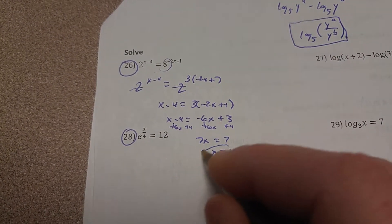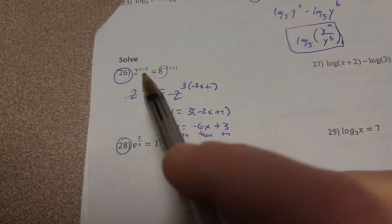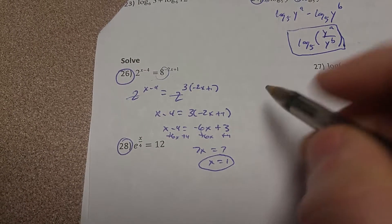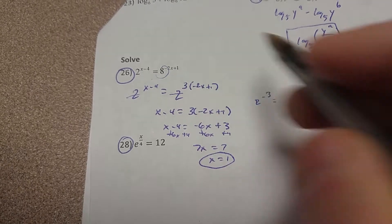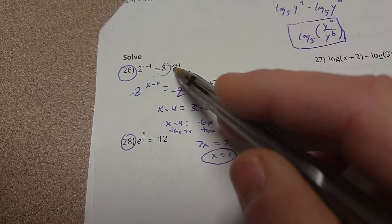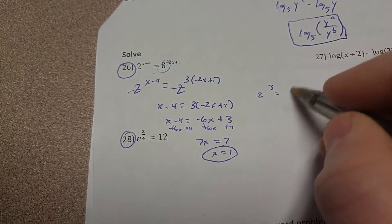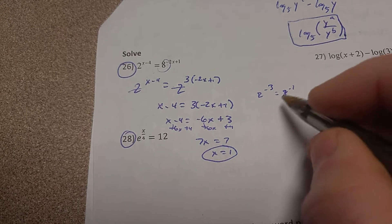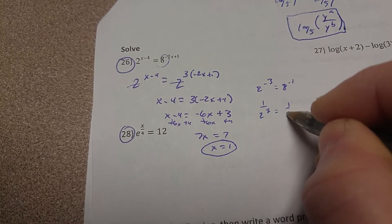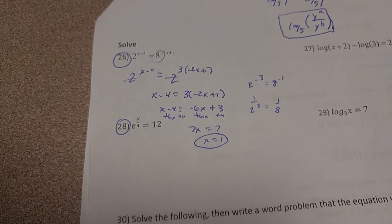You could always plug that in to check. So this would be 2 to the negative 3. 8 to the negative 2 times 1 is negative 2, plus 1 is negative 1, so 8 to the negative 1. And this is 1 over 2 cubed, and this is 1 over 8. You can see that those are going to be the same.